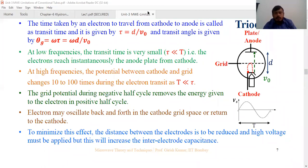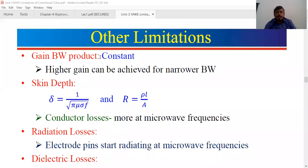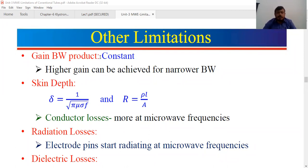Other limitations include the gain-bandwidth product. For electronic circuits, gain and bandwidth product is constant — if you want more gain, you need to sacrifice bandwidth, and if you want more bandwidth, you need to compromise on gain. This is a problem that can be overcome in klystron tubes. Power losses include conductor loss, radiation loss, and dielectric losses.